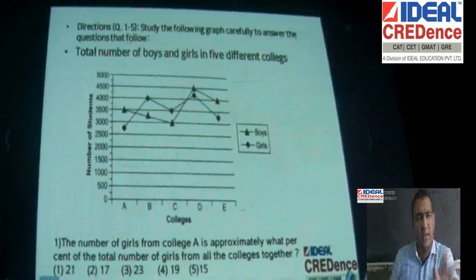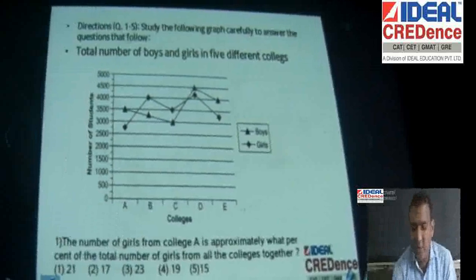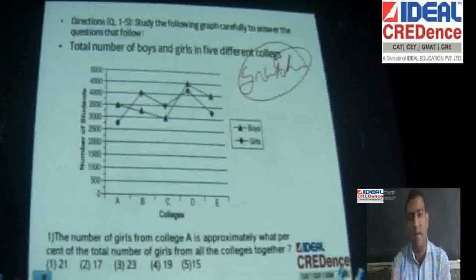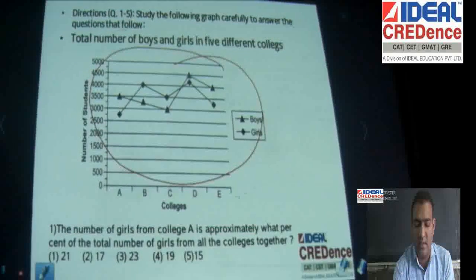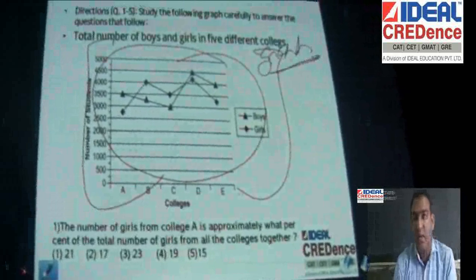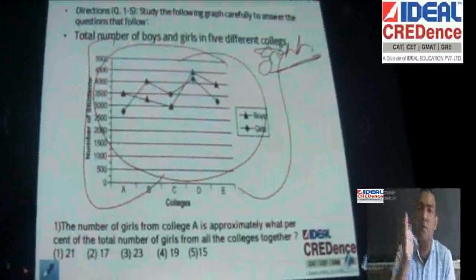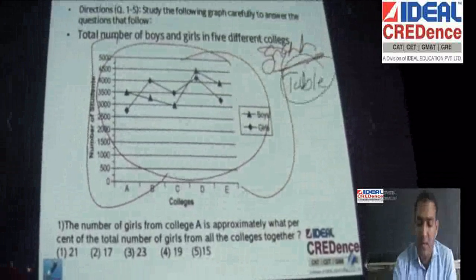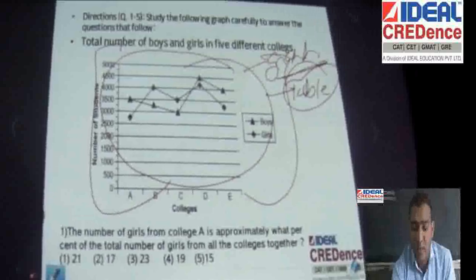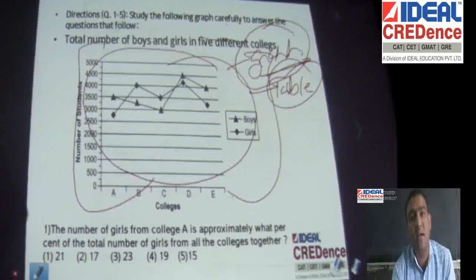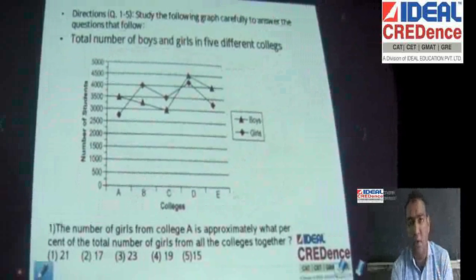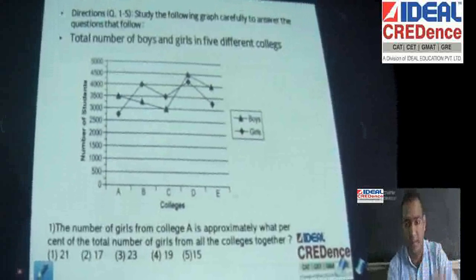Hello guys, we will be talking about a few shortcut techniques in data interpretation. A lot of times we talk about data interpretation as graphical representation of any kind of data. If they wanted you to do calculations, they would have given you a table. But in CAT or any management entrance exam, even bank exams, table is a different thing and graph is a different thing. So the goal is: can I solve questions graphically without using a lot of calculations? In this session I'm going to tell you a lot of shortcuts which will be very useful in solving graphic questions.